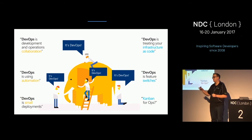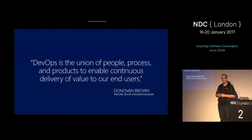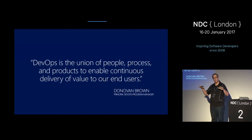Some people say DevOps is all about automation. Others say DevOps is only about culture — putting dev and ops together so they start working together. Or some say it's about feature toggles and monitoring. All of them are true — they're all a part of DevOps. But what we like to use is a definition by Donovan Brown, the principal DevOps program manager at Microsoft. It is his job to make sure that everything Microsoft produces has good support for DevOps and that Microsoft can help you move your company and projects to DevOps.